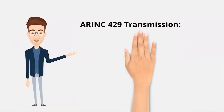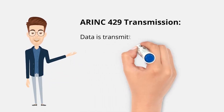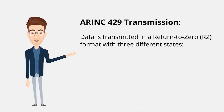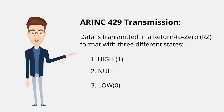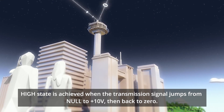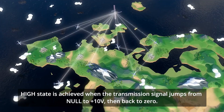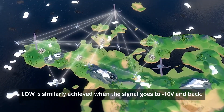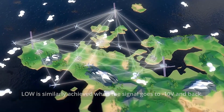ERINC-429 transmission data is transmitted in a return-to-zero format with three different states: HIGH-1, NULL, and LOW-0. The HIGH state is achieved when the transmission signal jumps from null to plus 10 volts, then back to zero. LOW is similarly achieved when the signal goes to minus 10 volts and back.